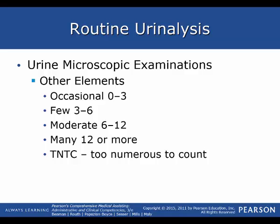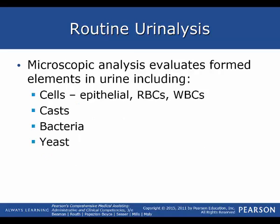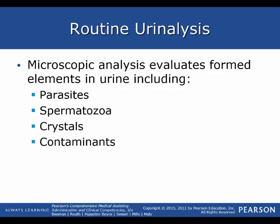The numerical ranges used are: occasional, which means 0 to 3; few, which is 3 to 6; moderate is 6 to 12; many is 12 or more; and TNTC, which means too numerous to count. Microscopic analysis evaluates formed elements including epithelial cells, red blood cells, white blood cells, casts, bacteria, yeast, parasites, spermatozoa, crystals, and any kind of contaminants.